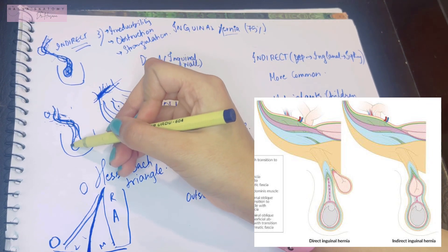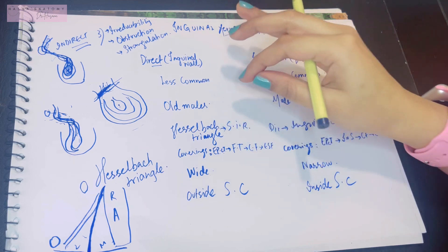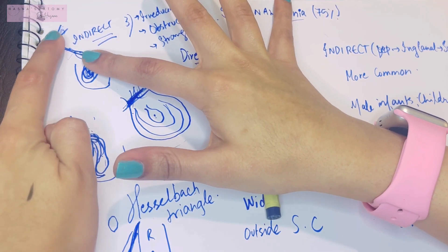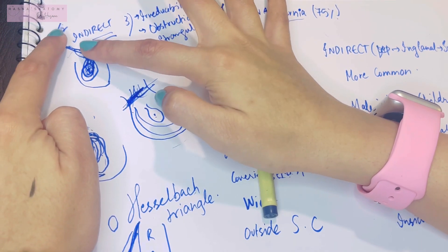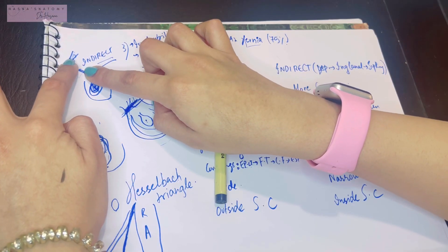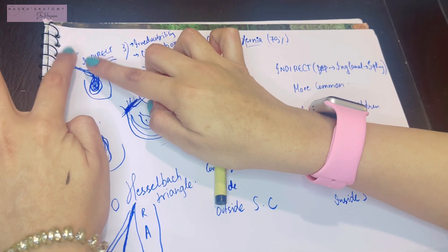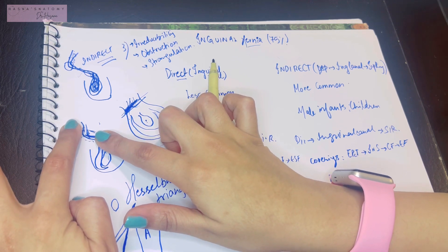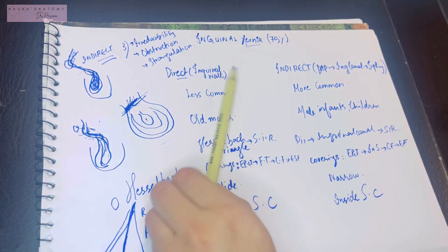To clinically differentiate between direct and indirect inguinal hernia, we use the ring occlusion test. The examiner places a finger on the superficial inguinal ring and the deep inguinal ring, then asks the patient to cough. In indirect inguinal hernia, an impulse is felt at both the deep and superficial inguinal rings. In direct inguinal hernia, the impulse is felt only at the superficial inguinal ring, not the deep ring — and an impulse can be felt over the inguinal triangle.